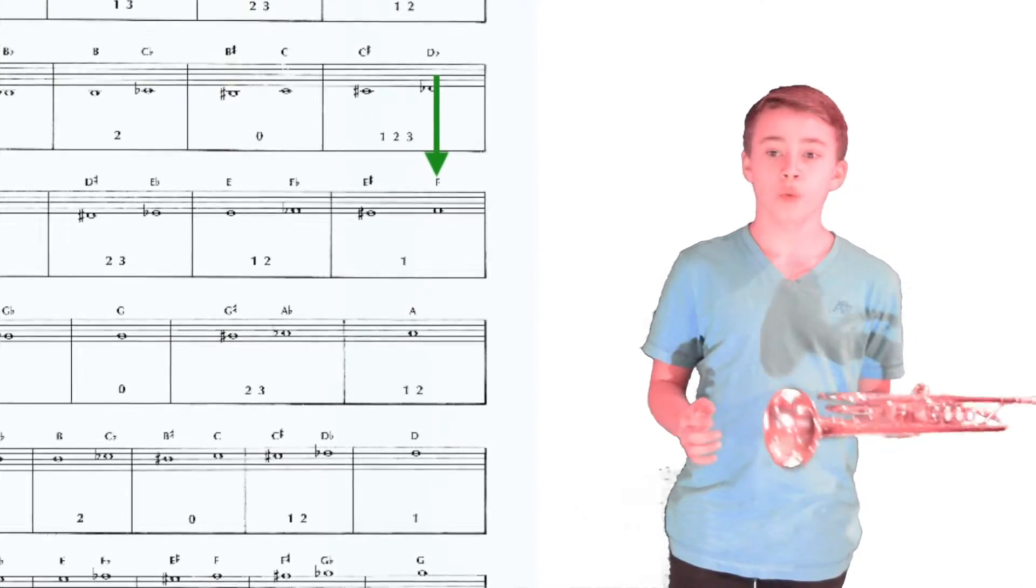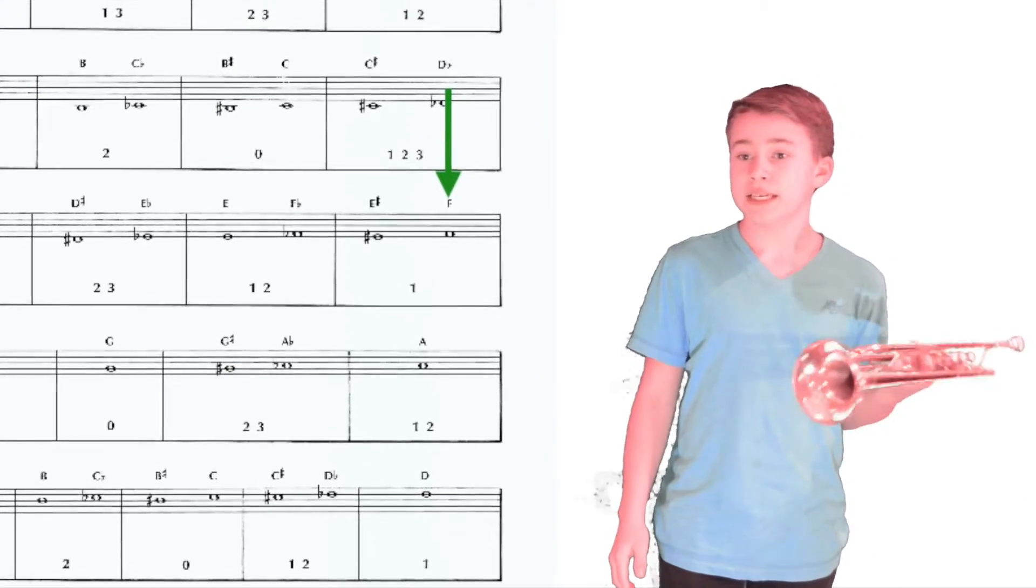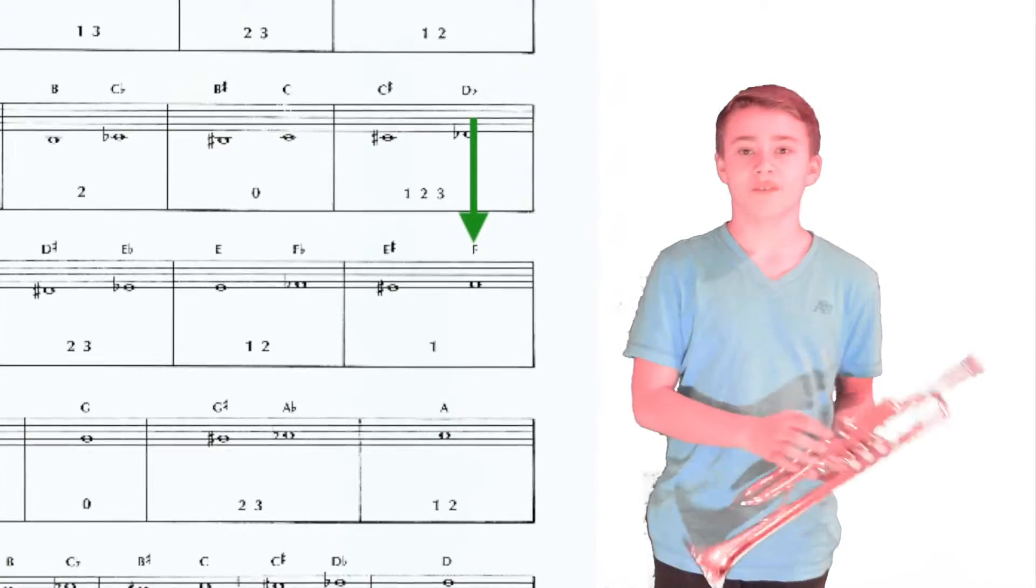The fourth note is F, which uses the same embouchure as E, as the note E, while you press down valve 1.